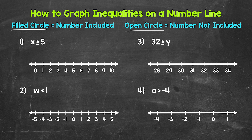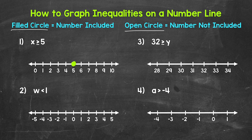Starting with number one, where we have x is greater than or equal to 5. Since x is greater than or equal to 5, that means 5 is included — 5 is a solution. So let's start at 5 with a filled circle. A filled circle shows that we are including that number, and an open circle shows that we are not including that number. So a filled circle is needed here. Now we need to represent the greater than 5 part, so we need to draw an arrow pointing to the right — the direction of all of the numbers greater than 5.